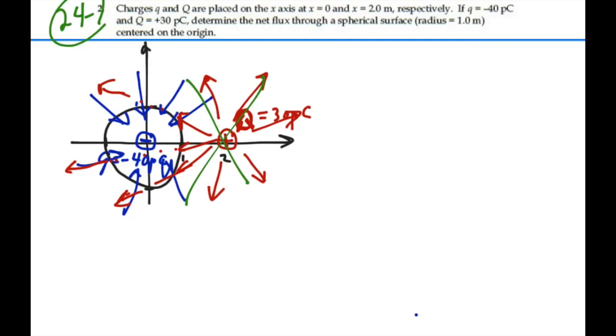So we're going to say that our flux is equal to the charge enclosed over epsilon-naught. In this case, that's going to be Q1 over epsilon-naught.